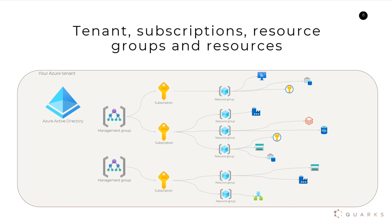Within the tenant, we have management groups — a logical grouping of subscriptions, resource groups, and resources. There's always one root management group within each tenant, but you can choose to have multiple. Subscriptions are in place for billing purposes — when you create a resource, it must have a subscription connected to how you're billed. Within each subscription, you can have one or multiple resource groups where resources reside. That's a quick overview of how the Azure tenant is structured.